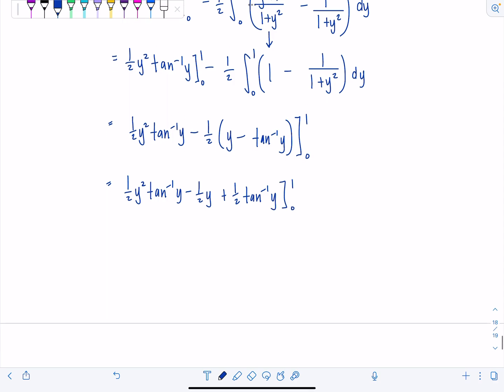So 1 half y squared tan inverse of y minus 1 half y plus 1 half tan inverse of y from 0 to 1. Okay, plugging in 1, the upper limit, we're going to have 1 half times 1 squared tan inverse of 1. You should know that, pi over 4. If not, you can review your trig in your own little private shame. And then minus 1 half times y, 1 half times 1, plus 1 half times tan inverse of 1. Again, pi over 4.